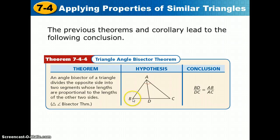So in this case, BD to DC is going to be the same ratio as AB to AC. We could also say BD to AB is the same as DC to AC.